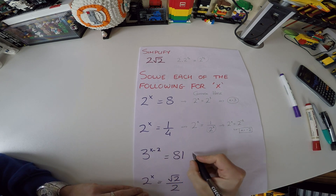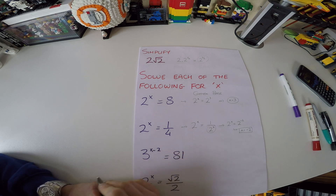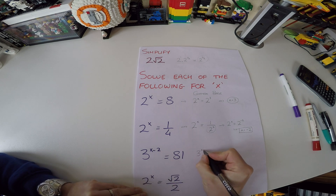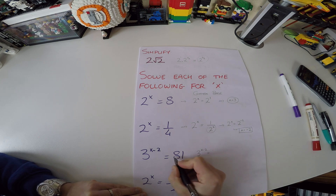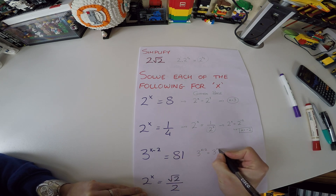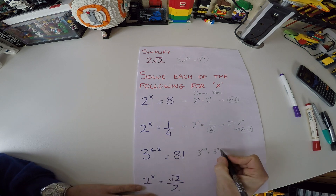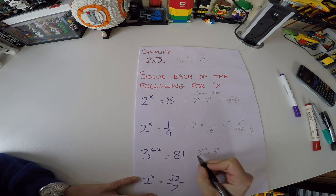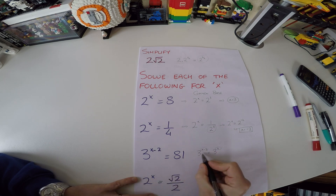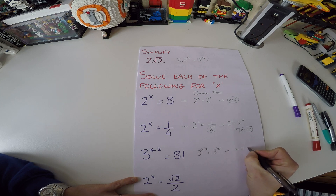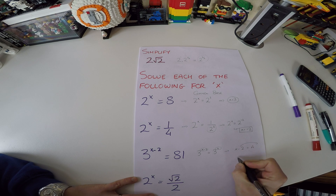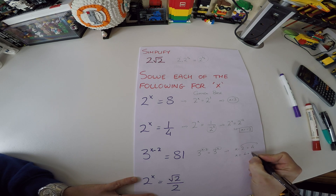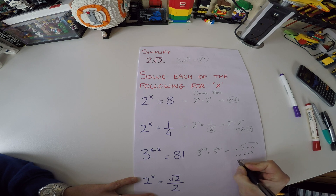The next one is a little trickier: 3 to the power of (x minus 2) equals 81. Can we change 81 as 3 to the power of something? Yes — 81 is 3 to the power of 4. Since the bases are the same, the exponents must be equal, so x minus 2 equals 4. Bringing the minus 2 across gives us x equals 6.